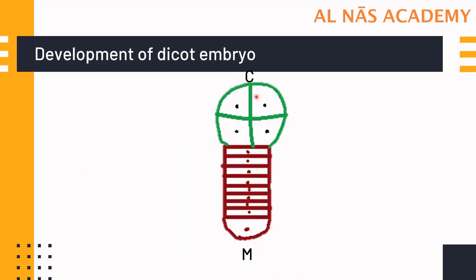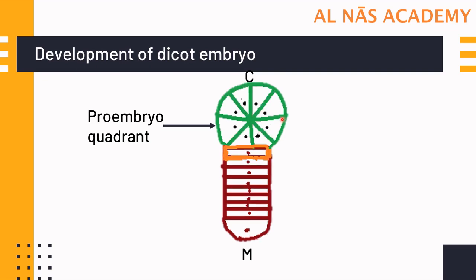The pro-embryo quadrant has four cells. It will further divide to form eight cells, then termed pro-embryo octant. The suspensor remains as is, but the pro-embryo starts looking bigger — a mass-like or ball-like structure. We are drawing all the cells in a schematic representation to understand the fate of each cell.